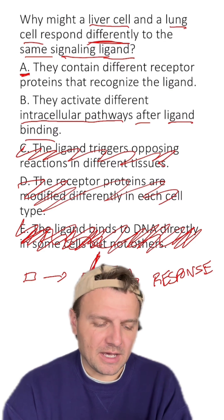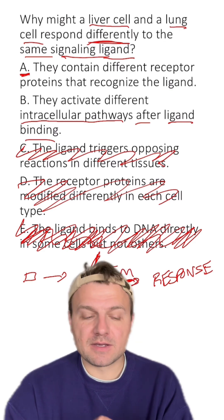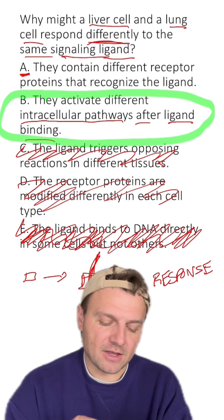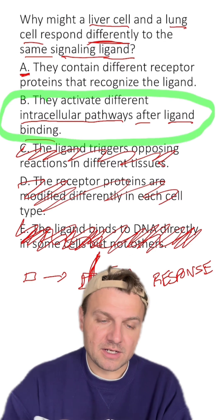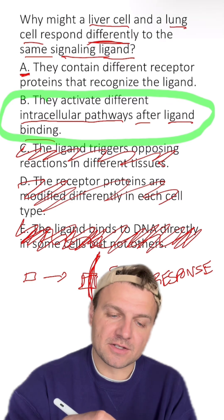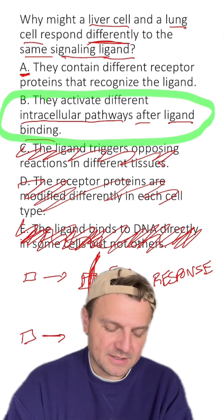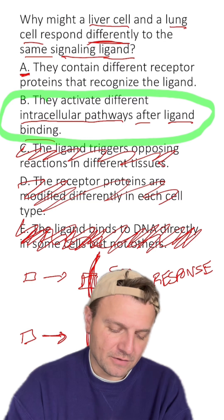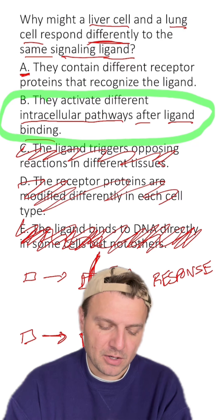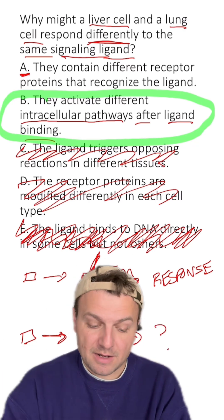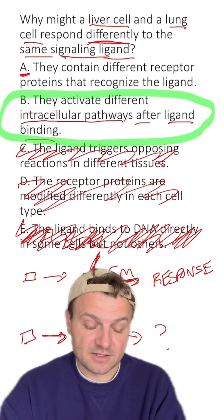Between A and B, B is going to be the best answer here because each cellular pathway within the response for these cells is going to be a little bit different. You might have the same ligand bind to two different cells using the same membrane proteins, but there's going to be a different response in this neighboring or different cell.